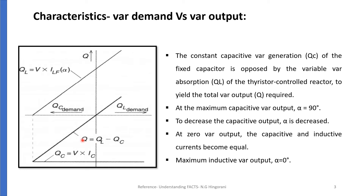We vary QL by varying alpha because the fundamental current of TCR is an alpha-dependent quantity. At the maximum capacitive VAR output, the thyristor controlled reactor is off, i.e. alpha is equal to 90 degrees. At zero VAR output, the capacitive and inductive currents become equal and thus the capacitive and inductive VARs cancel out each other. With further decrease in angle alpha, the inductive current becomes greater than the capacitive current, resulting in a net inductive VAR output. This is possible only when the rating of the reactor is greater than that of the capacitor.